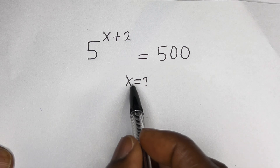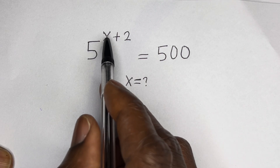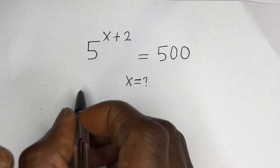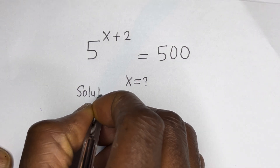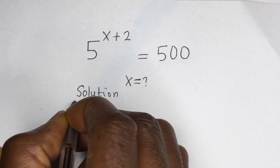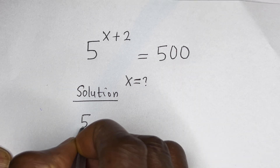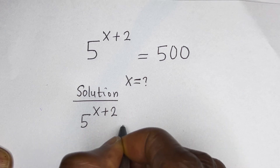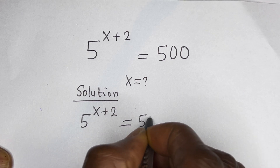Hello. How to find the value of s in this equation: 5 raised to power s plus 2 is equal to 500. Solution. Here we have 5 raised to power s plus 2 is equal to 500.